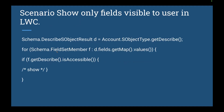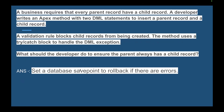The next question: show only fields visible to the user in LWC. You use Schema.DescribeObjectResult for the Account object type and call getDescribe(). Then iterate over the schema field members using getValues(), and check if the field's isAccessible() returns true — show it; otherwise, don't.